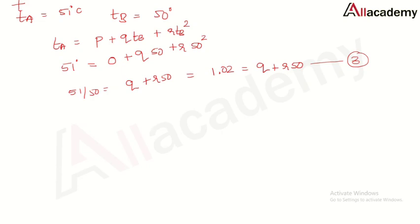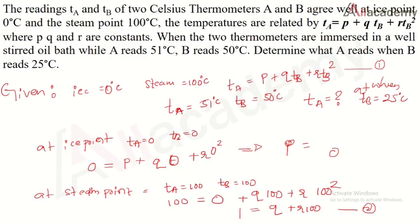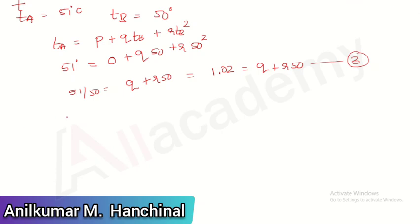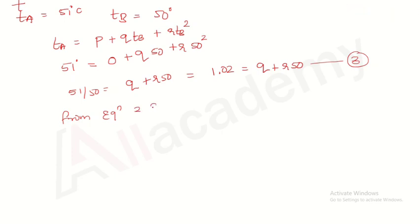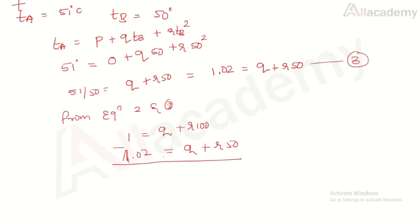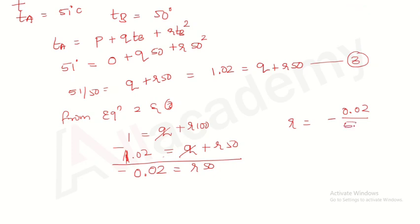Simplifying equations 2 and 3: equation 2 is 1 = q + r·100, and equation 3 is 1.02 = q + r·50. Subtracting, q cancels: 1 - 1.02 = r·100 - r·50, giving -0.02 = r·50. Therefore r = -0.02/50 = -0.0004.